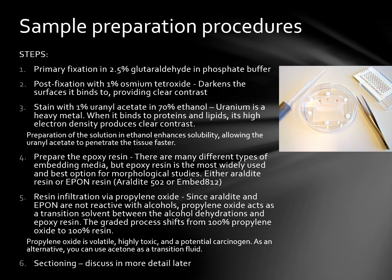Step 4 is to prepare the epoxy resin if required. There are many different types of embedding media, but epoxy resin is the most widely used and best option for morphological studies; Araldite and Epon resin are the most popular. Step 5 is to infiltrate with the resin via propylene oxide. Since Araldite and Epon are not reactive with alcohols, propylene oxide acts as a transition solvent between the alcohol dehydration and epoxy resin. The graded process shifts from 100% propylene oxide to 100% resin. Propylene oxide is volatile, highly toxic, and potentially carcinogenic, so it is very important to wear your PPEs. You can also use acetone as an alternative transition fluid. The next step is sectioning.